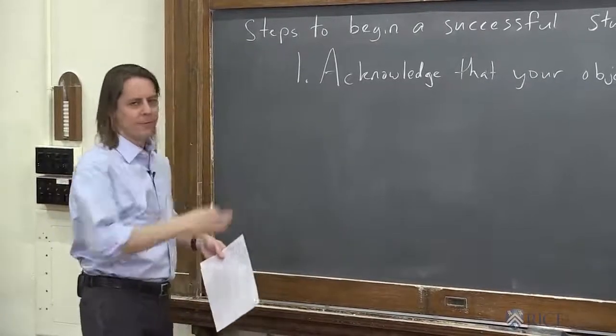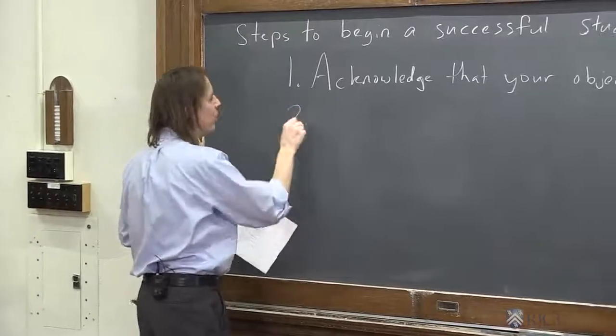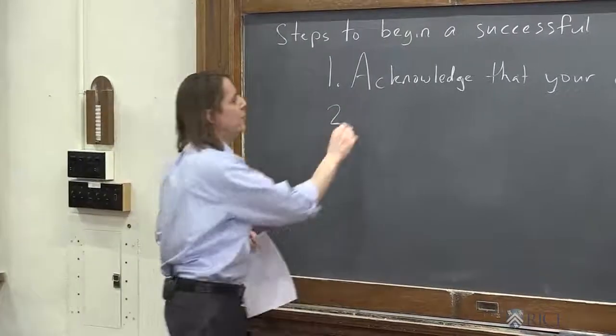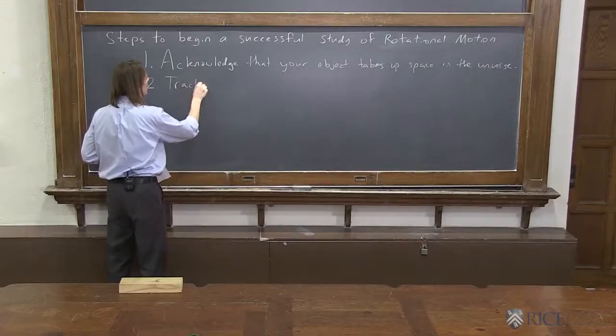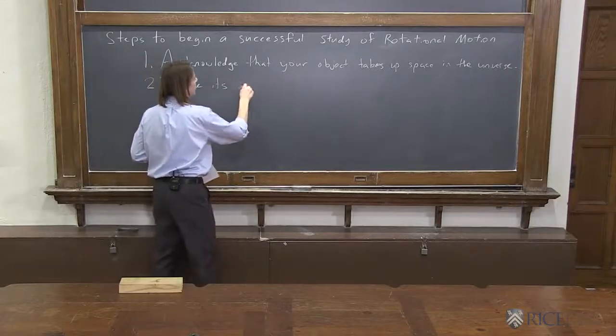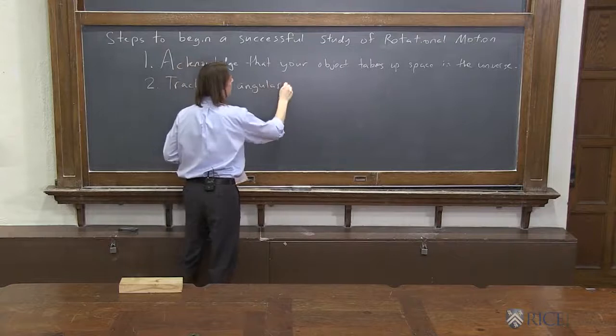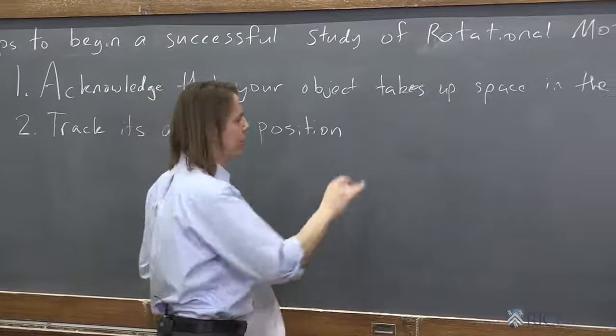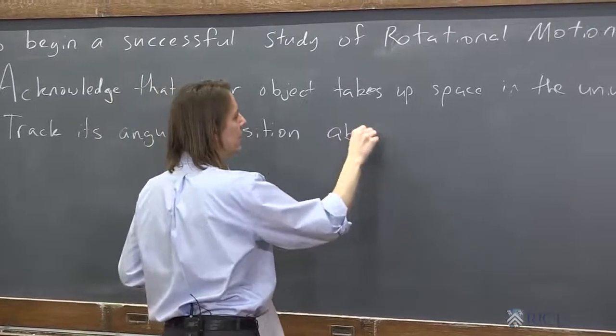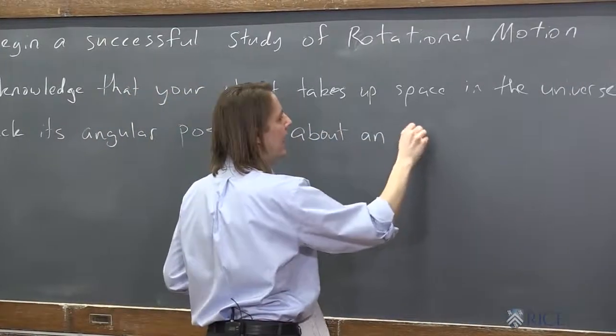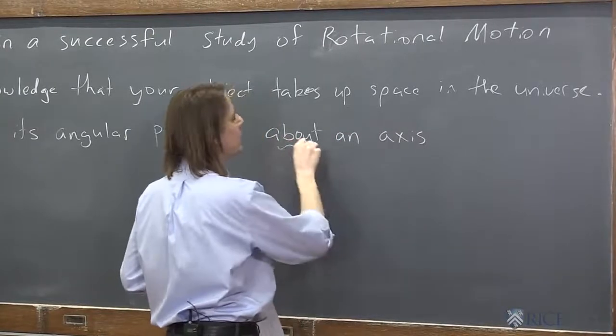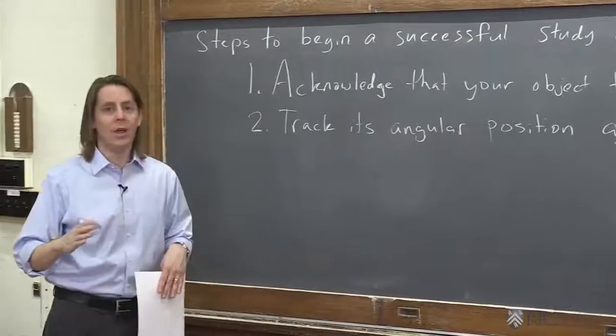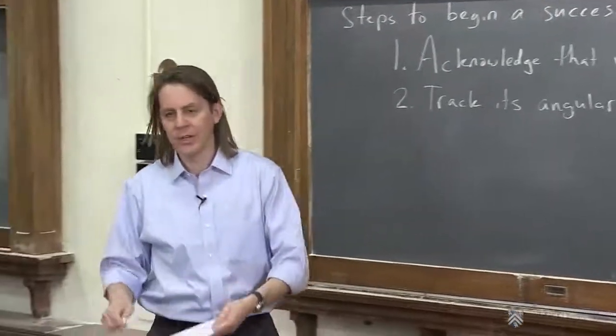That's just sort of the life-affirming one. Let's get on to some more important ones here. Next, you want to track its angular position, which way it's pointing. And here are the three most important words here: about an axis. It really doesn't mean anything to talk about the angular position, or a change in angular position, unless you define the rotation axis.